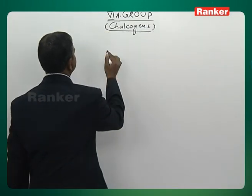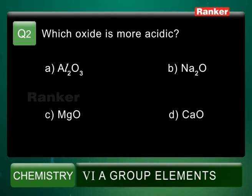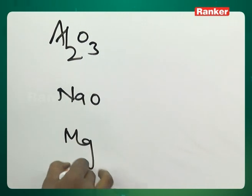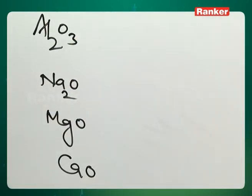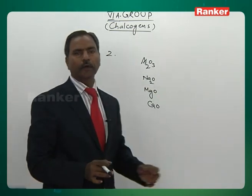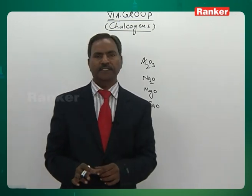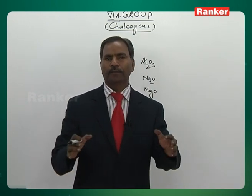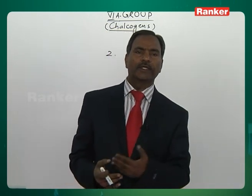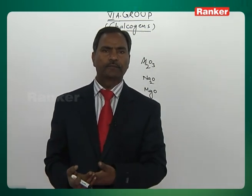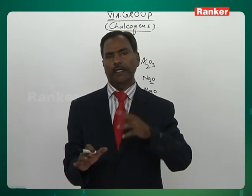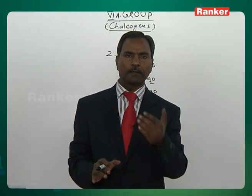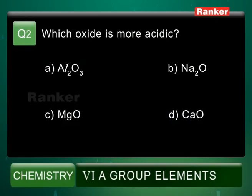Question number 2: Which oxide is more acidic? Option A is Al2O3. Option B includes Na2O, MgO, and CaO. Sodium, magnesium, and calcium belong to alkali and alkaline earth metals — their oxides are strongly basic. Aluminium belongs to the 13th group and Al2O3 is amphoteric. In comparison to the strongly basic oxides, Al2O3 is more acidic. Therefore, for question number 2, the answer is A.